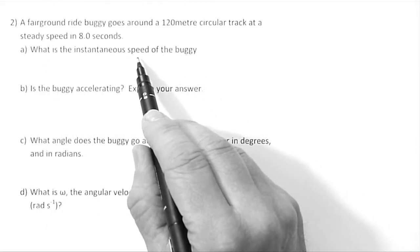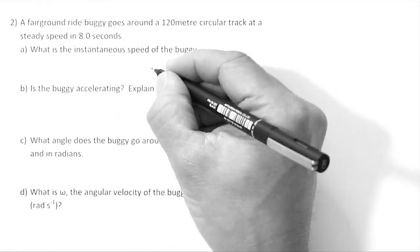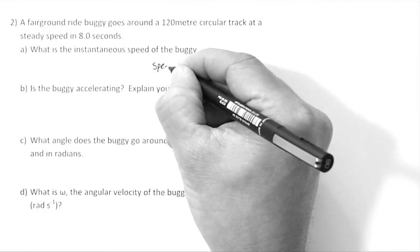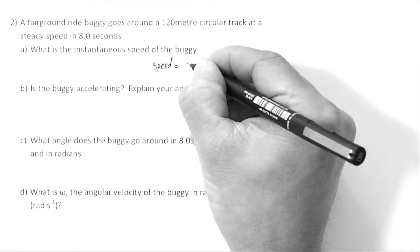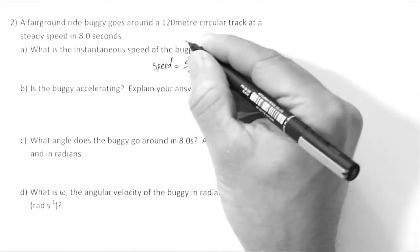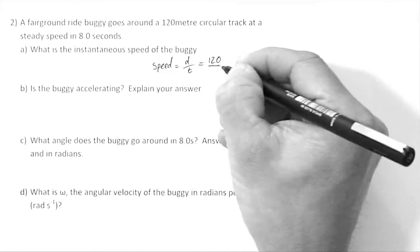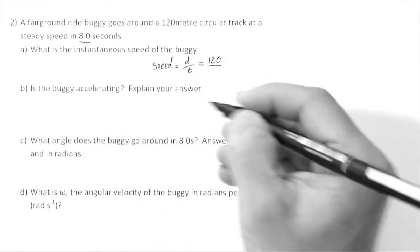Well, here we're talking about speed, not velocity. And so we can simply say that the speed is equal to the distance divided by the time. The total distance is 120 metres and the total time is 8 seconds.